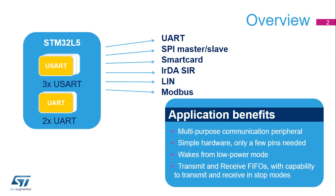The STM32L5 devices embed three Universal Synchronous Asynchronous Receiver Transmitter (USART) and two Universal Asynchronous Receiver Transmitter (UART) peripherals. The USART is a very flexible serial interface that supports asynchronous UART communication, SPI master and slave modes, Smart Card ISO 7816 communication, IRDA serial infrared communication, and LIN mode. It also provides features useful for implementing Modbus communications. The UART implements the same features as the USART, except support of synchronous protocols, SPI, and Smart Card.